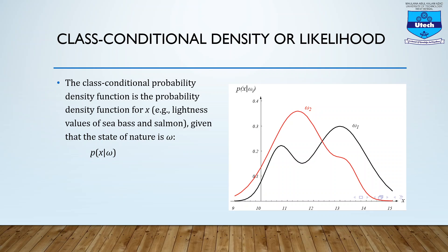We have a different concept: the class conditional density or likelihood. The class conditional probability density function is the probability density function for x, one particular feature. The example could be the lightness value of a fish given that the state of nature is W — that is, you already know which class that particular fish belongs to. So, that is the probability of x given W, which is the class conditional density or likelihood.